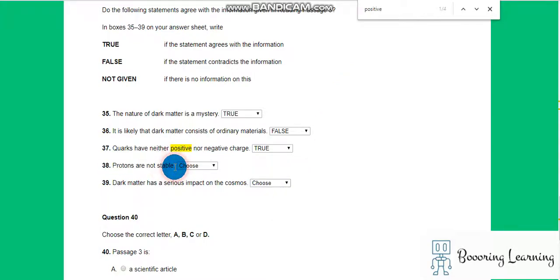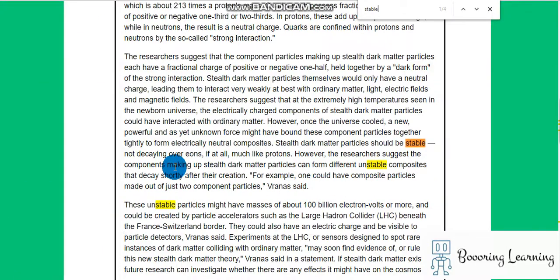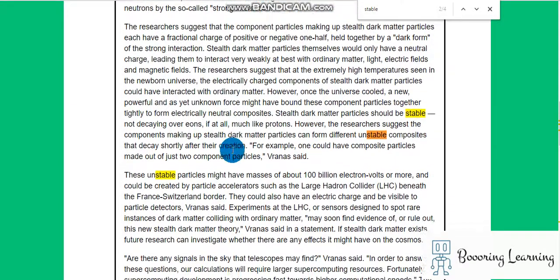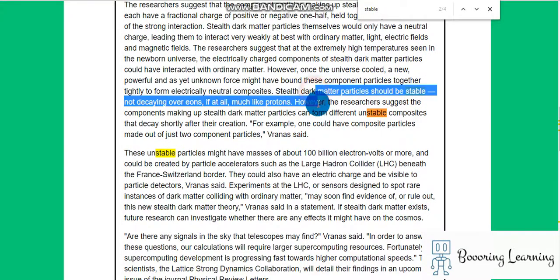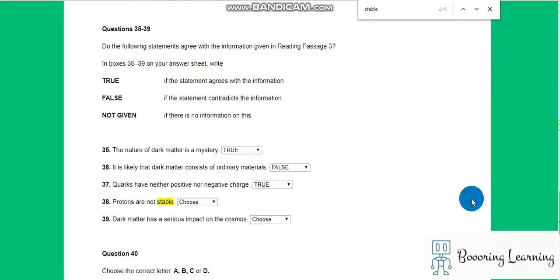Question 38: Protons are not stable. Stealth dark matter particles should be stable, not decaying over eons if at all, much like protons. However, the researchers suggest the components making not still dark matter. Protons are not stable—false.